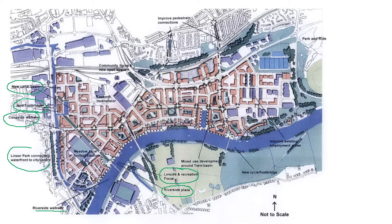We've got the riverside plaza where there'll be shops and offices, leisure and recreation focus in that area as well, and an arrow pointing to a mixed-use development around Trent Basin. By mixed use, that means cheaper homes for people on lower incomes as well as more luxurious homes for people on higher incomes. That creates a mixed neighbourhood, which is a great thing — you don't want to create housing that's just cheap, because that attracts low aspiration. Mixed use also includes shopping areas and offices.